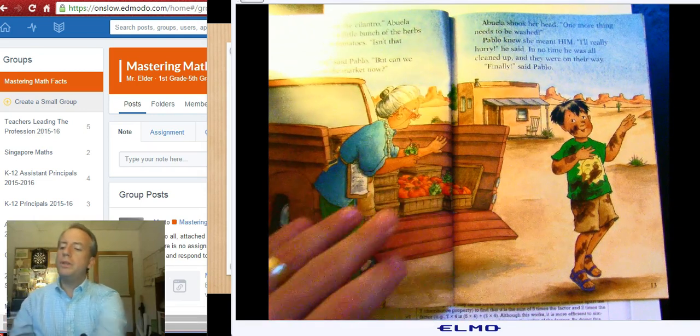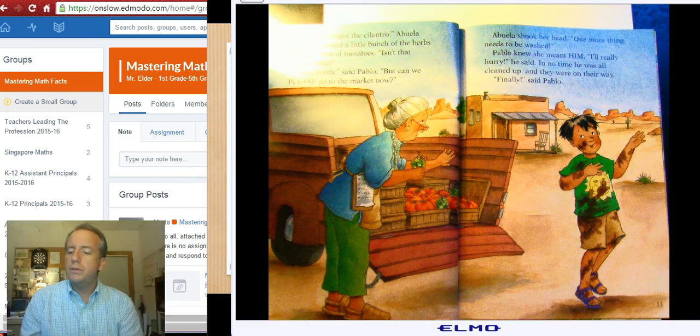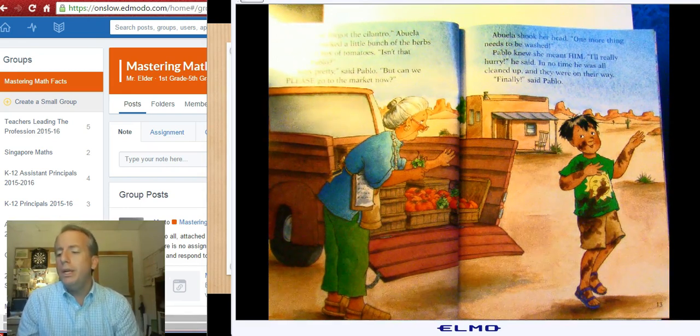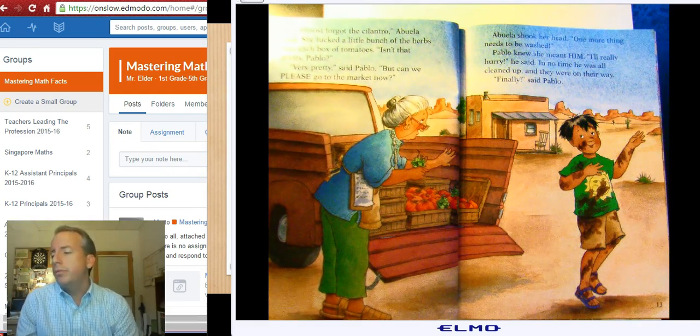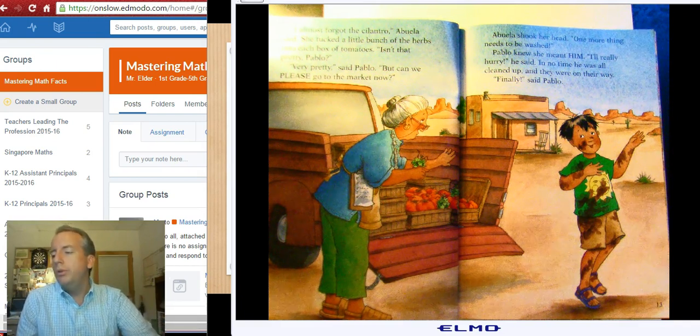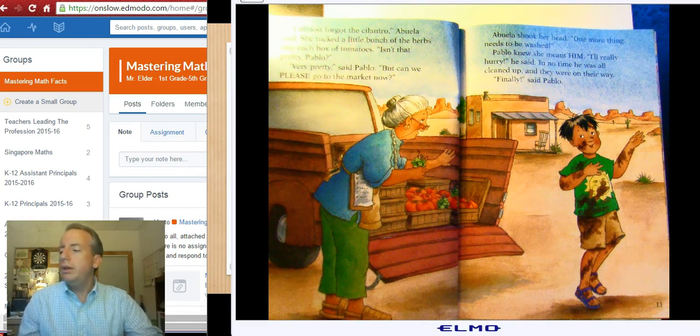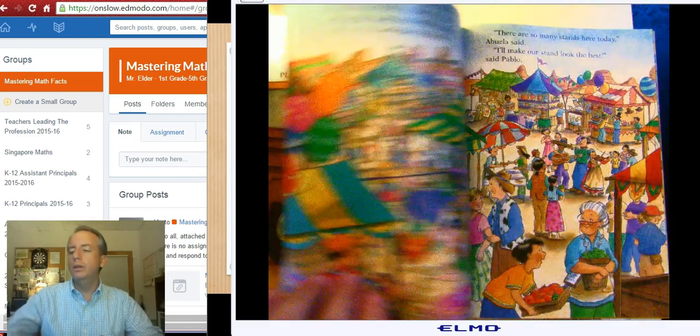I almost forgot the cilantro, Abuela said. She tucked a little bunch of the herbs into each box of tomato. Isn't that pretty, Pablo? Very pretty, said Pablo. But can we please go to the market now? Abuela shook her head. One more thing needs to be washed. Pablo knew that she meant him. I'll really hurry, he said, and in no time he was all cleaned up and they were on their way. Finally, said Pablo.